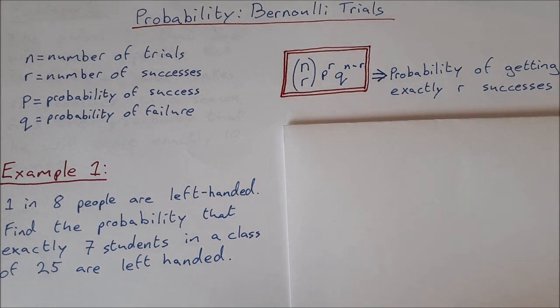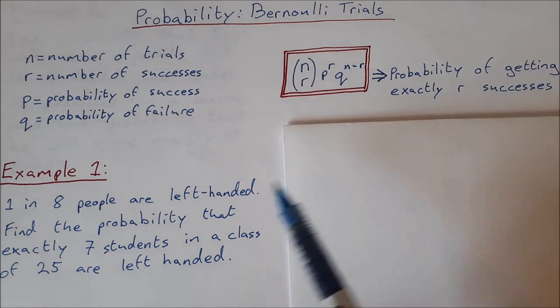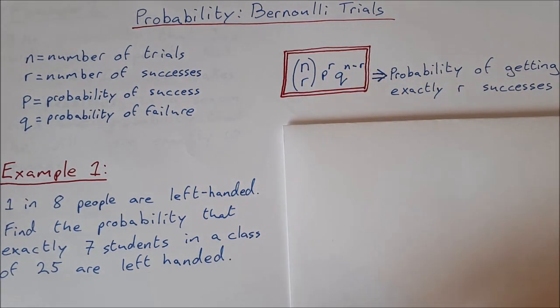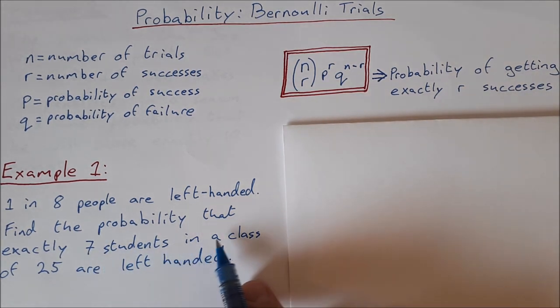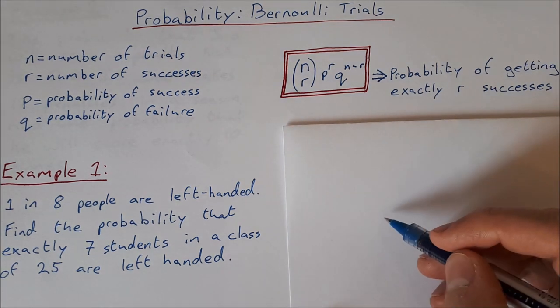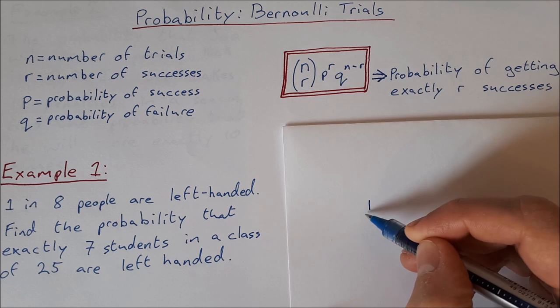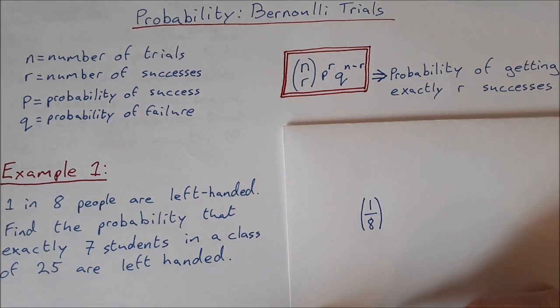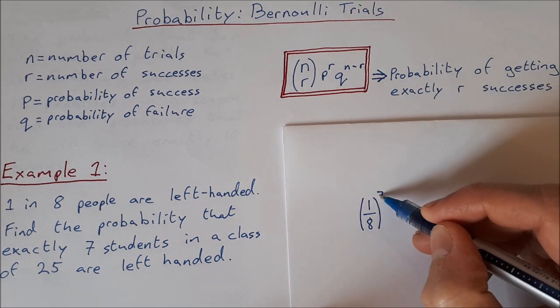So in my first example here, it says one in eight people are left-handed. Find the probability that exactly seven students in a class of 25 are left-handed. So instead of going and seeing what is n or p or q, what I do is the following. So I look at, well, what do I want? I want seven students to be left-handed. Okay, so what's the probability of being left-handed? The probability of being left-handed is one in eight. Now, I want seven students to be left-handed, so I'm going to put that to the power of seven.